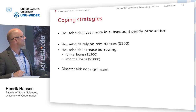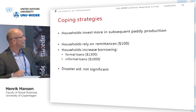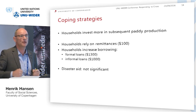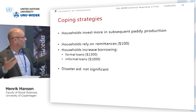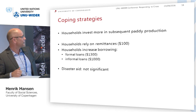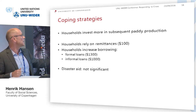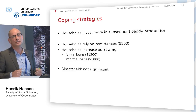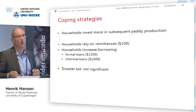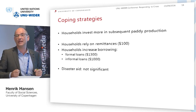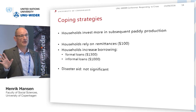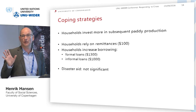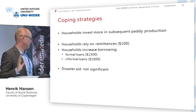For coping strategies, households invested more in subsequent crop production, essentially restoring the land. In terms of funding, there was a flow of remittances — on average $100 for those who received them. There was a quite large increase in both formal and informal borrowing; formal borrowing was mainly from state-owned banks. Disaster aid was not mentioned by many, so short-term disaster relief is not something households in Vietnam relied on heavily.